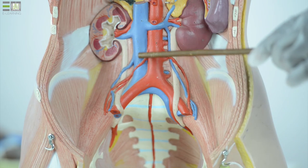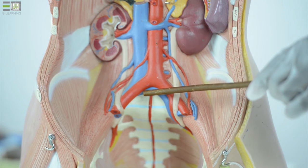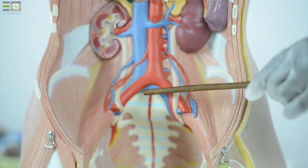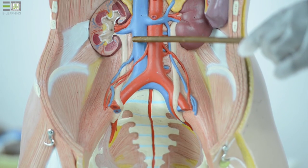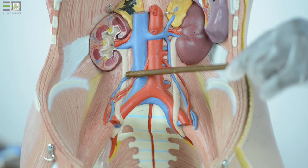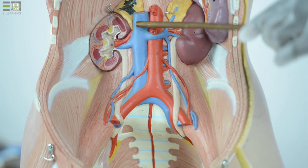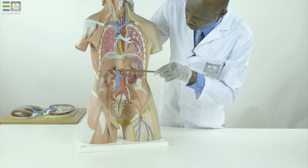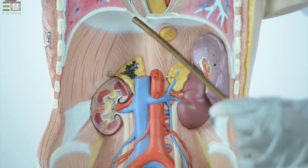Appear here the inferior vena cava which is formed at the level of the fifth lumbar vertebra by the union of the two common iliac veins and passes on the right side of the vertebral column. It receives the right gonadal vein, the right renal vein, and the left renal vein along its course before entering into the caval opening at the tendinous part of the diaphragm.